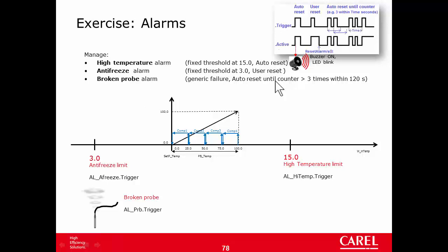The high temperature alarm is simple. We can define a fixed limit of 15 degrees. We won't create a parameter, but a limit is something like the set point and the proportional band. So the alarm will be active when the water inlet temperature is greater than or equal to 15. Antifreeze when the temperature is less than 3 degrees. And the broken probe when the probe is connected or disconnected.